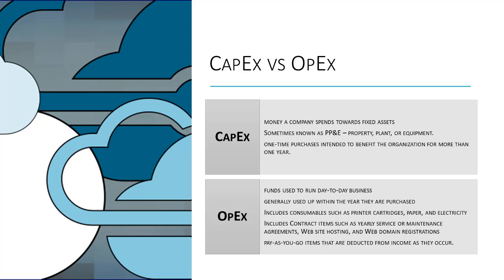When goods and services are purchased as OPEX, costs are assigned to the OPEX budget and tracked in the profit and loss statement. Monthly expenses associated with that equipment are tracked and deducted from the bottom line as they're incurred — they're not depreciated, as many CAPEX items are.